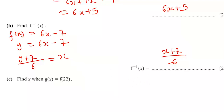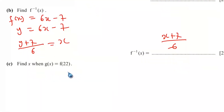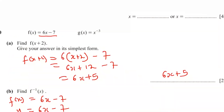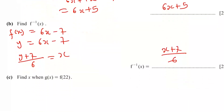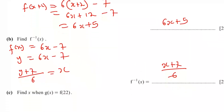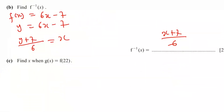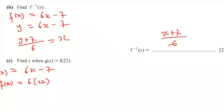Part C: find x when g(x) equals f(22). First, find f(22). Since f(x) equals 6x minus 7, f(22) equals 6 times 22 minus 7, which equals 132 minus 7, giving 125.